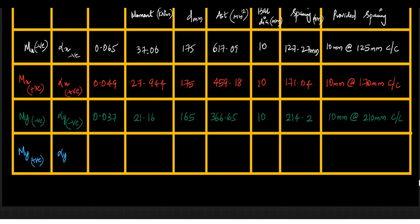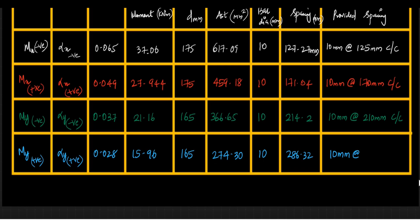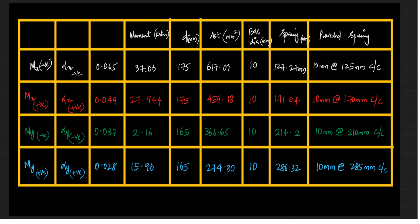For MY positive, alpha Y positive = 0.028 (single value, no interpolation), corresponding moment is 15.96 kN·m, effective depth = 165 mm, AST Y positive = 274 mm². Providing 10 mm bars, spacing required is 286.32 mm — provide 10 mm at 210 mm center to center. Once all these values are obtained, reinforcement is placed: X direction negative at supports, X direction positive at mid span, Y direction negative at supports, and Y direction positive at mid span.